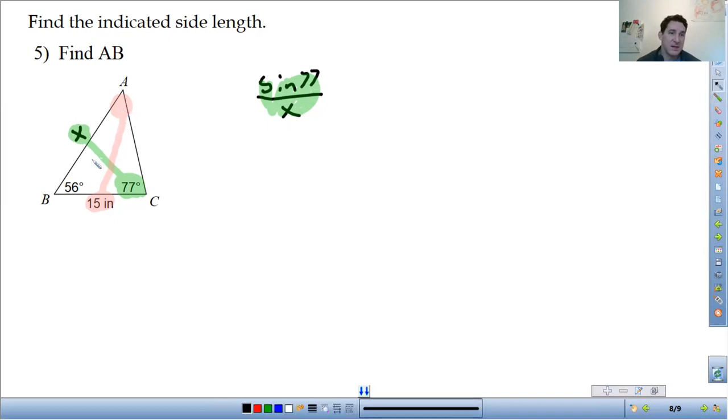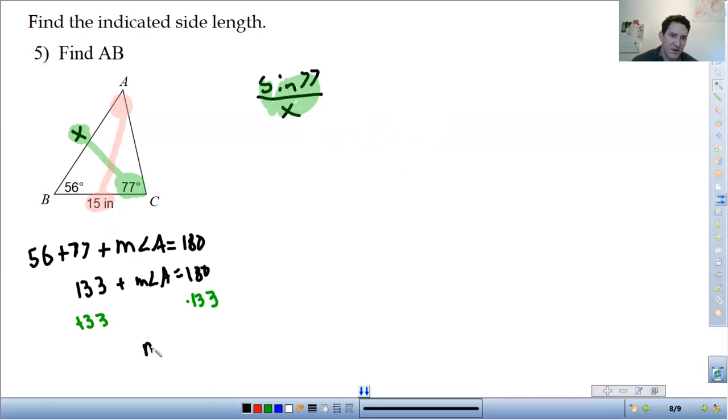So 56 plus 77 plus the measure of angle A all need to add up to 180. So 56 plus 77 comes out to 133 plus the measure of angle A, and then subtract 133 from both sides. You get the measure of angle A is equal to 47. So now that we know that we can finish setting up our ratio. So it's going to be the sine of 47 over 15.